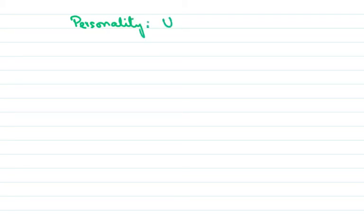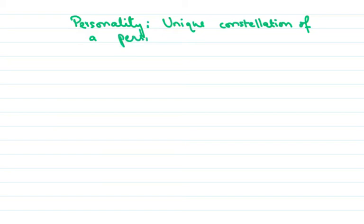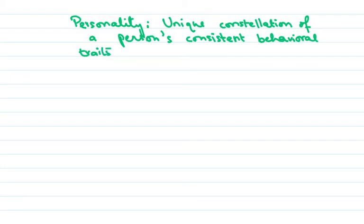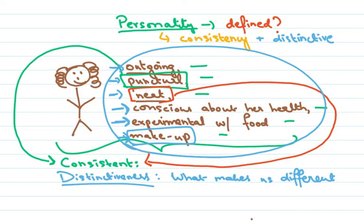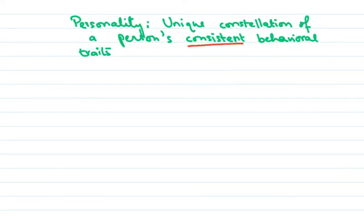So the way we define personality is that it is a unique combination, or a unique constellation, of a person's consistent behavioral traits. What that basically means is that when we go back and look at this example, the fact that all of these different traits occur together in Ifat — this is her unique constellation of consistent behavioral traits, and this is what makes up personality.